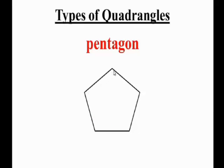This type of polygon has five sides. We call that a pentagon.